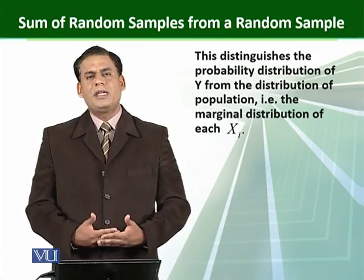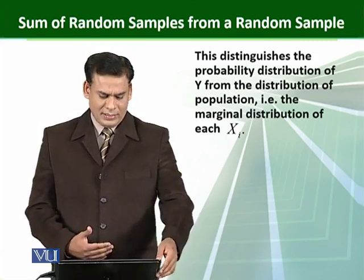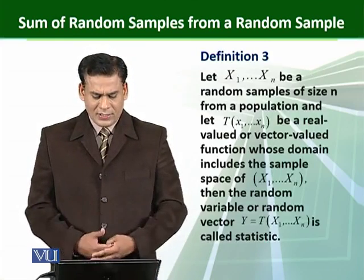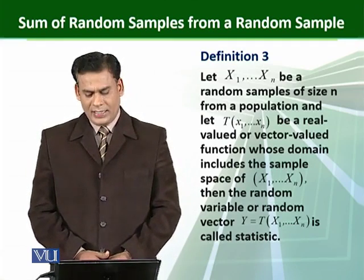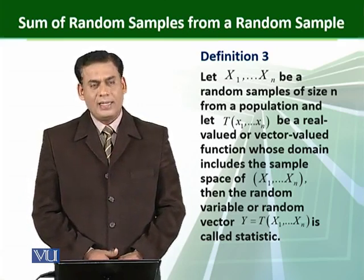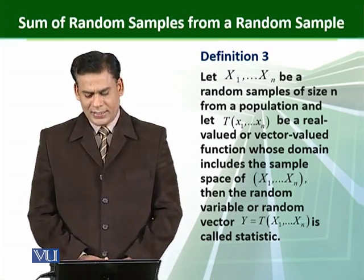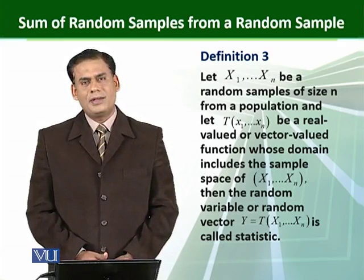The definition is: Let X1, X2, ..., Xn be a random sample of size n from a population, and let T(x1, x2, ..., xn) be a real-valued or real vector function whose domain includes the sample space of random variables.